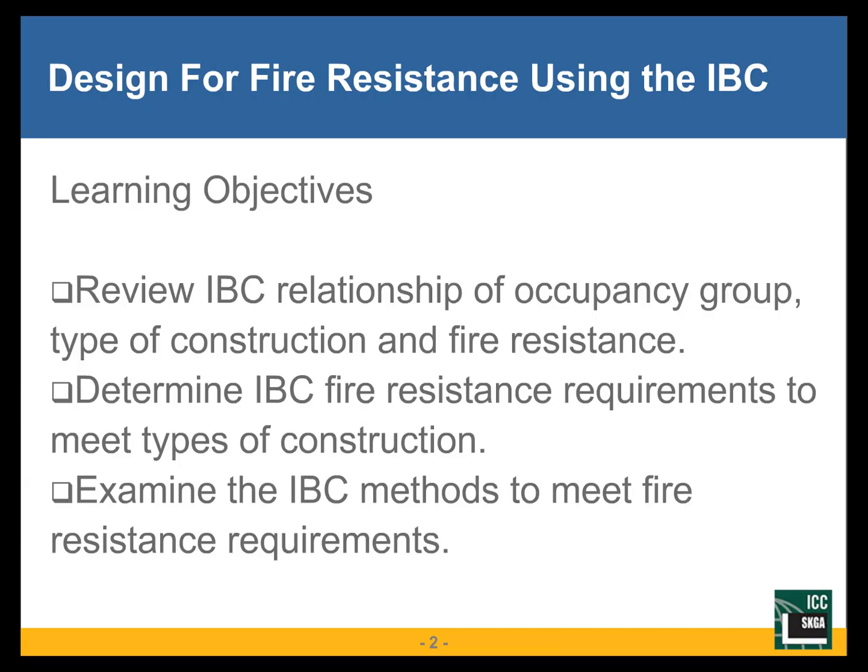This presentation has three learning objectives. First, in order to talk about designing for fire resistance in the IBC, we have to understand the relationship between the occupancy groups identified in the code, the type of construction we're dealing with, and how those come together with regard to fire resistance. Second, we need to look at specific portions of the code that identify the specific types of fire resistance expected to be met in order to build a building, based on occupancy and type of construction.